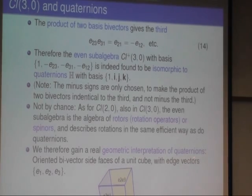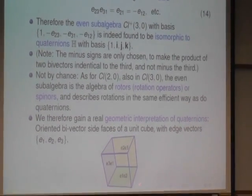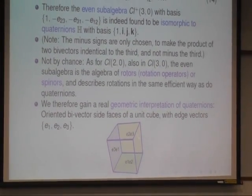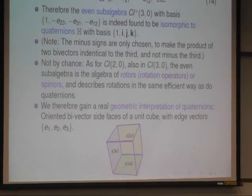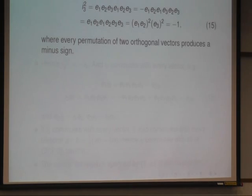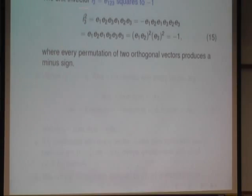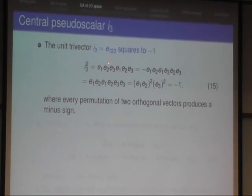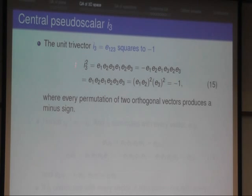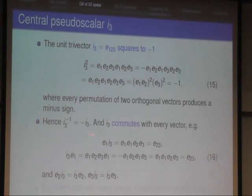And therefore you also get a geometric interpretation of quaternions. Quaternions are simply the unit side faces with orientation of the unit cube at the origin, and these are the three vectors, e1, e2, and e3. And the pseudo-scalar, or unique tri-vector as it is also called, it gets often the special name i3 here to indicate the grade, e1 times e2 times e3, and we can compute its square, and we get that it also squares to minus 1. And so therefore the inverse is simply minus i3, like a complex imaginary unit.